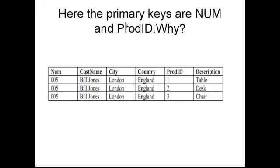Here is another example showing how to find primary keys. The primary keys are num and product ID. Customer name depends on num — if we know the number we know the customer name, city, and country. But if we know num we don't know the description or the product ID, so we need another primary key. If I know the product ID I know the description — table, desk, and chair correspond to product IDs 1, 2, and 3 respectively. So the primary keys here are num and product ID.